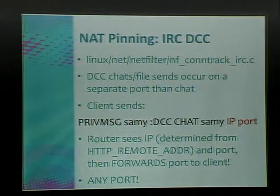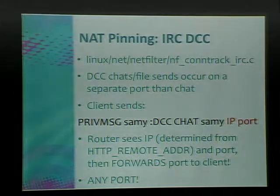What if we use the same method as cross-protocol scripting and connect to that IRC server, but instead of spamming pound teen chat, we just send a message that says DCC chat this person on port 12345? What does the router do? The router sees Anna making a connection out to an IRC server, recognizes port 6667, starts monitoring that connection, then sees a DCC request and says I better port-forward that incoming port.